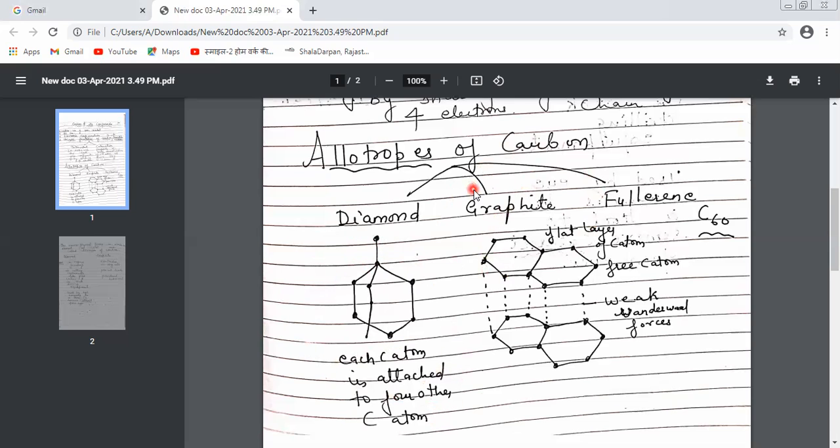Now let's discuss graphite, the next allotrope of carbon. In graphite, there are flat hexagonal rings. In graphite, each carbon atom is bonded to three others. If I point to this carbon, it has bonds one, two, and three. The fourth electron is free, which makes it a good conductor of electricity. When asked to name a non-metal that is a good conductor of electricity, graphite is the answer.